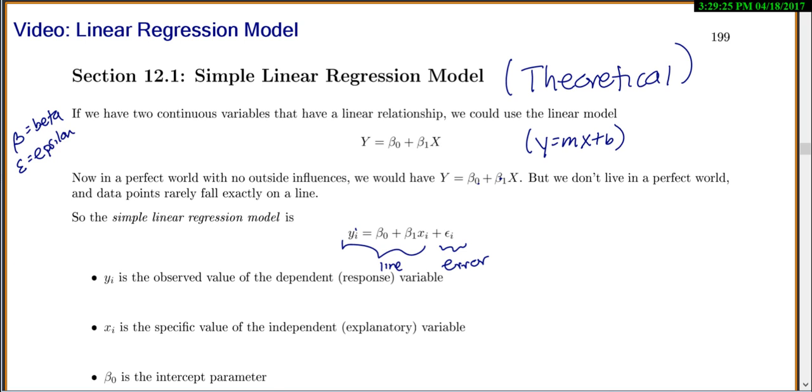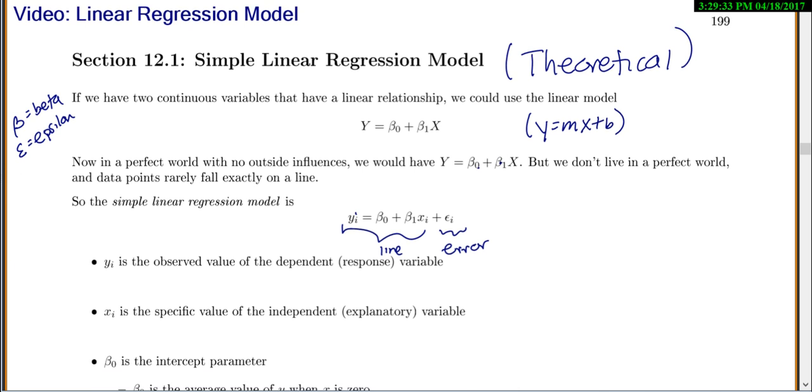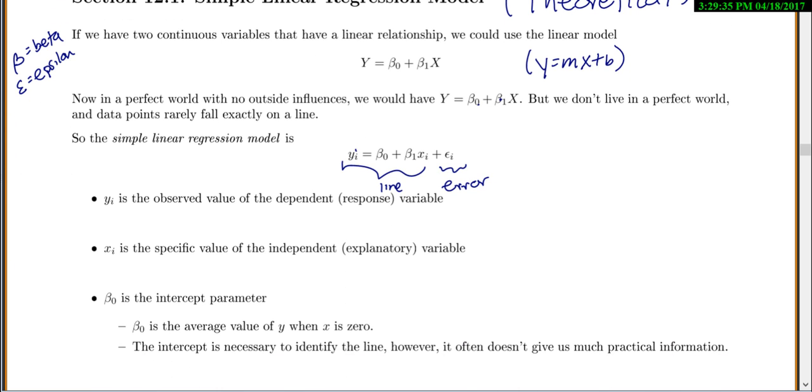So yi is the observed value of your dependent response variable, and xi is the specific value of your explanatory or independent x variable. Beta 0 is your intercept parameter. Now, what this means is this would be the average value of y when x is 0. So just like up here, b is when x is 0, what is y? The intercept is necessary to help us identify the line, but it doesn't usually give us practical information.